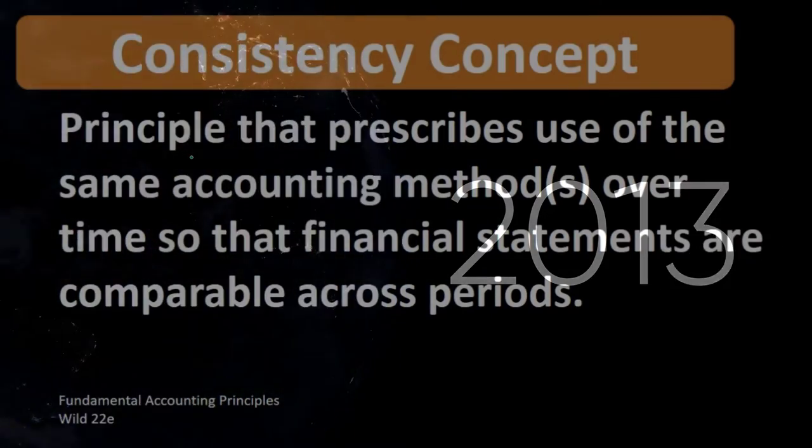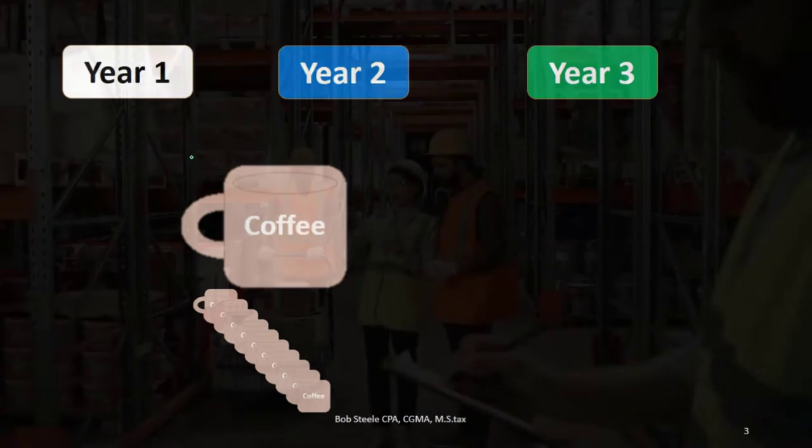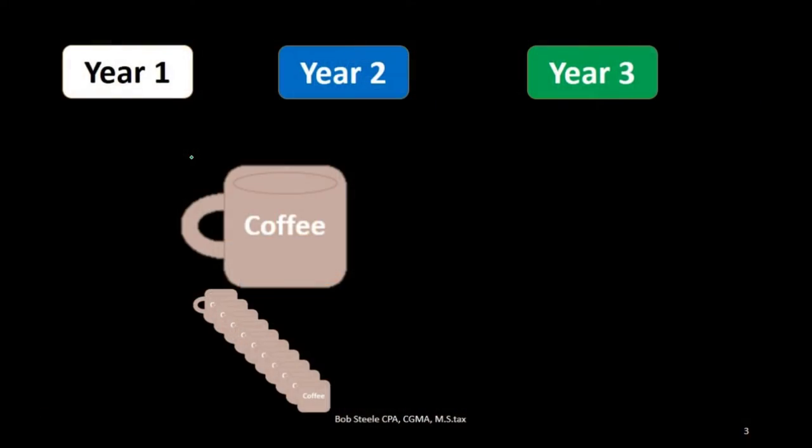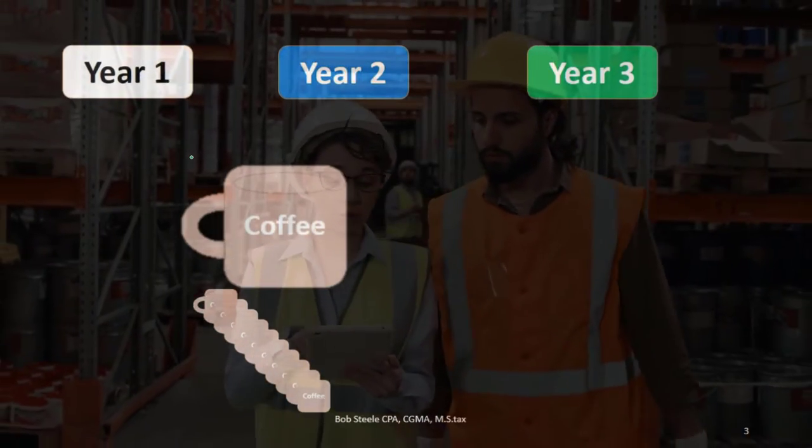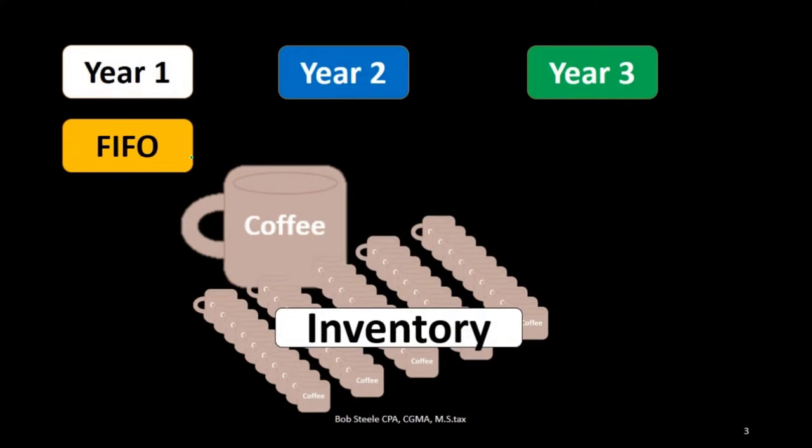For example, if we made an assumption about inventory, an area where we have cost flow assumptions and we're allowed to have different estimates, if we first assume that the inventory will be FIFO,